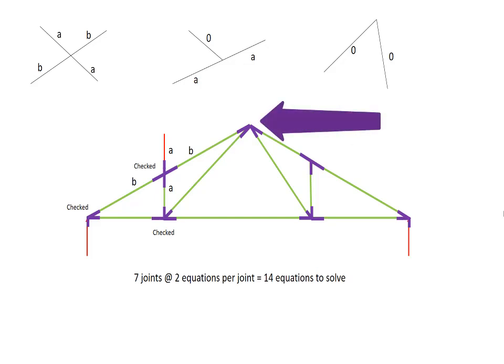Looking at the topmost joint, that also doesn't give us any information. It doesn't look like any of the three diagrams on the top of the screen. Just label it as checked and say it doesn't give us any information. Moving down to the bottom of the truss one panel over, that also doesn't look like any of the diagrams up above. We'll just label it as checked and say it doesn't give us any additional information.